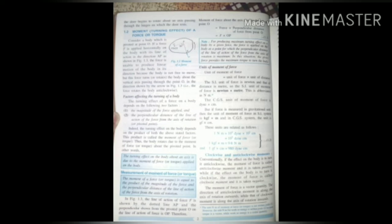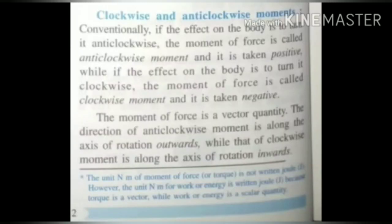Moment of force equals force times perpendicular distance. Its SI unit is Newton meter. There are two types of moment of forces: clockwise and anticlockwise. If the effect on the body is to turn it anticlockwise, it is called anticlockwise moment and is taken positive. If the effect is to turn it clockwise, it is called clockwise moment and is taken negative. The moment of force is a vector quantity - underline this point.